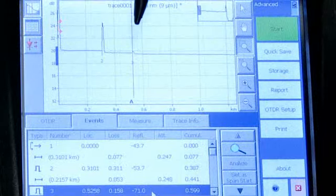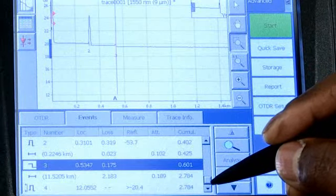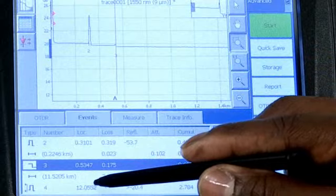Other information available from the event table are things like the span length and the location of the end of your system.